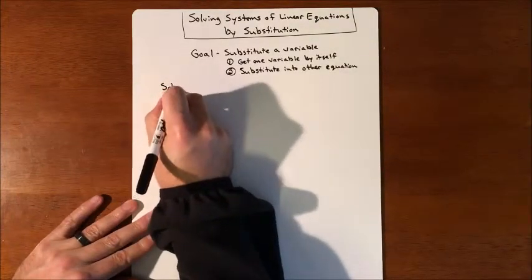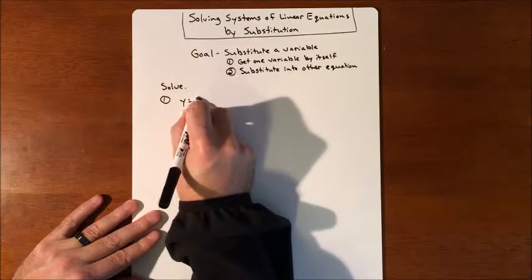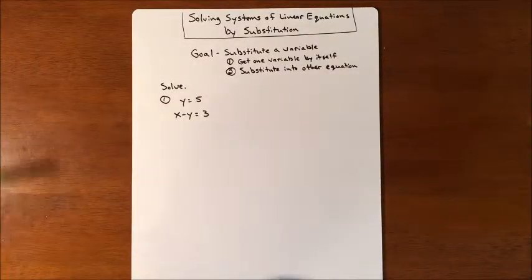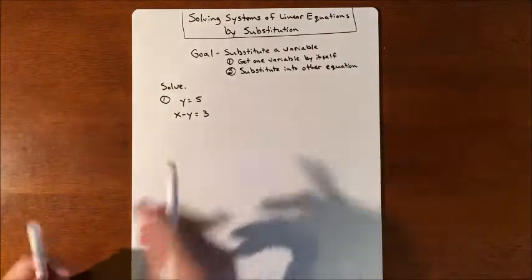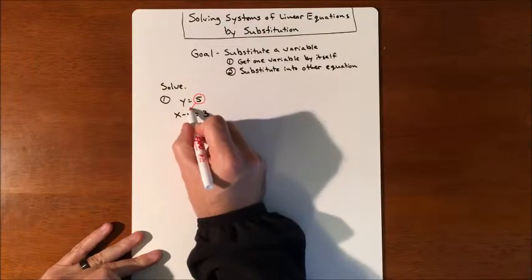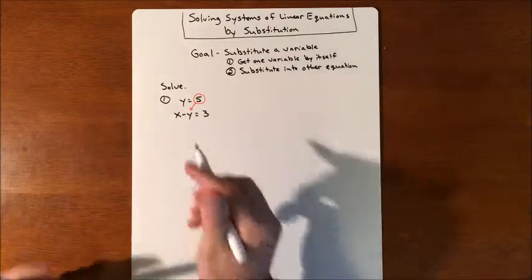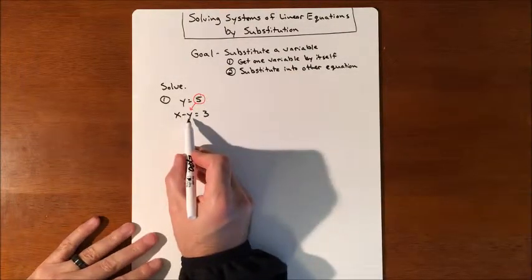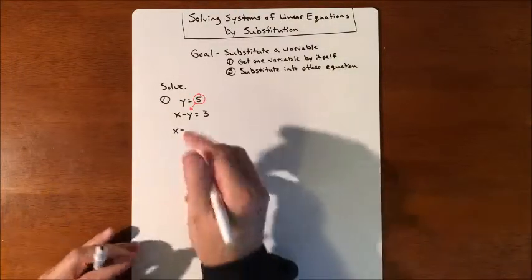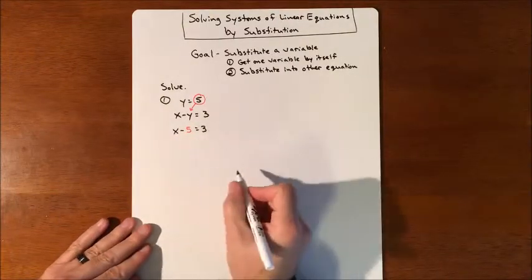Our first example: the directions say solve, and we have y equals 5 and x minus y equals 3. Since they already tell us what one of the variables is, we take the fact that y equals 5 and substitute it into the other equation. So if y equals 5 in this equation, it's also going to equal 5 in the other, so we rewrite it as x minus 5 — that's what we substituted — equals 3.